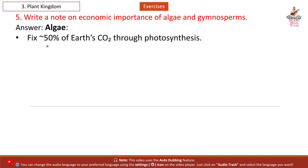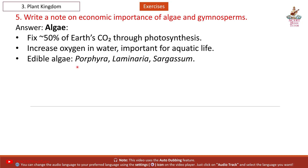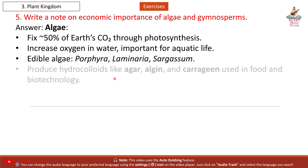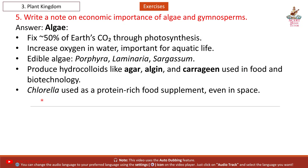Algae: fix approximately 50% of Earth's CO2 through photosynthesis. Increase oxygen in water, important for aquatic life. Edible algae include Chlorella, Laminaria, and Sargassum. Produce hydrocolloids like agar, algin, and carrageen, used in food and biotechnology. Chlorella is used as a protein-rich food supplement, even in space.